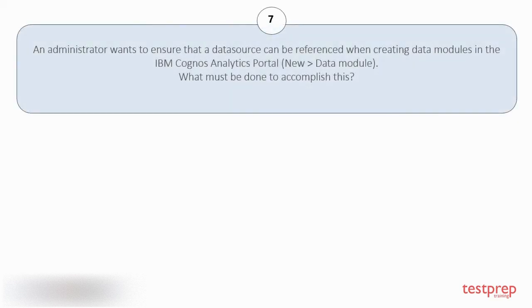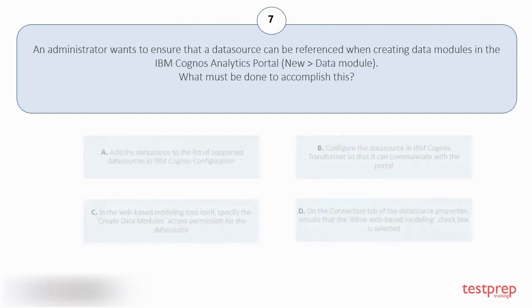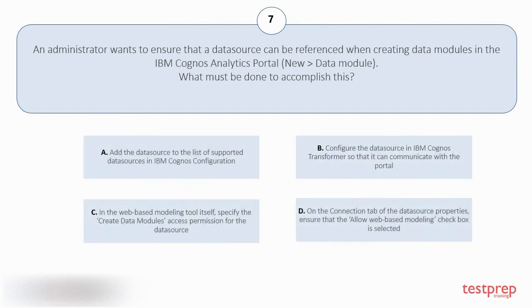Question number 7: an administrator wants to ensure that a data source can be referenced when creating data modules in the IBM Cognos Analytics portal. What must be done to accomplish this? Your options are: A. Add the data source to the list of supported data sources in IBM Cognos configuration. B. Configure the data source in IBM Cognos Transformer so that it can communicate with the portal.